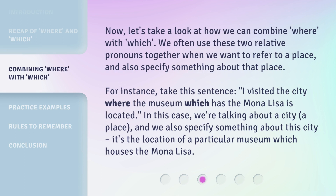Now, let's take a look at how we can combine 'where' with 'which'. We often use these two relative pronouns together when we want to refer to a place and also specify something about that place. For instance, take this sentence: 'I visited the city where the museum which has the Mona Lisa is located.' In this case, we're talking about a city — a place — and we also specify something about this city. It's the location of a particular museum which houses the Mona Lisa.